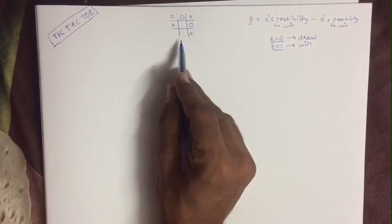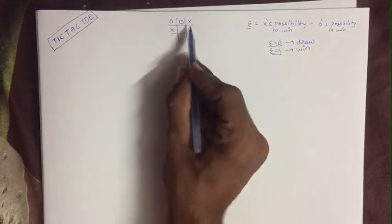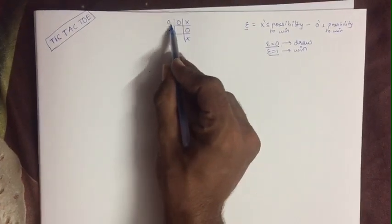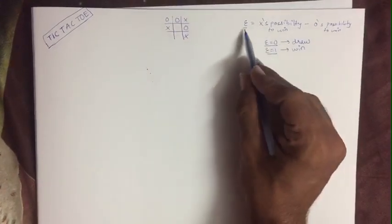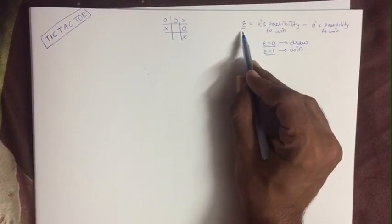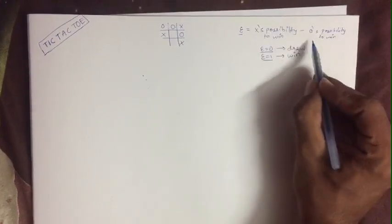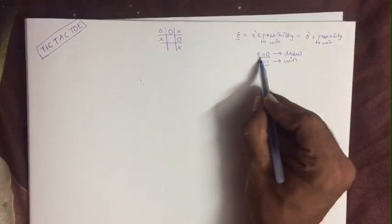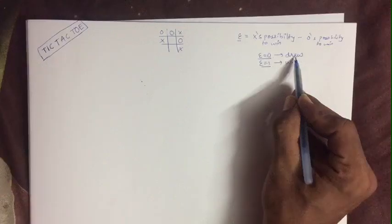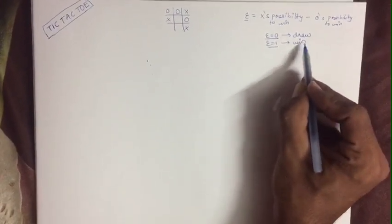This is the present state and the goal state is X has to win or O has to win. Now this is the heuristic function, taken as variable E. Here E equals X winning possibility minus O winning possibility. When E is equal to 0 it means it's a draw; when E is equal to 1 it means a win.